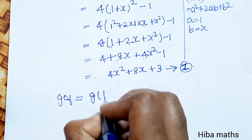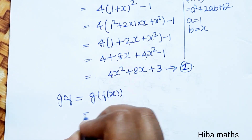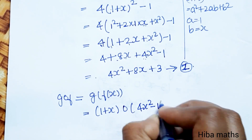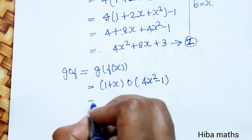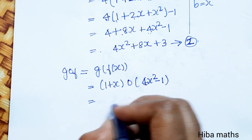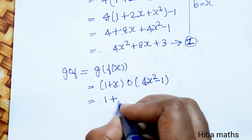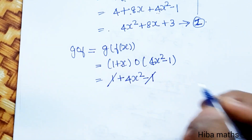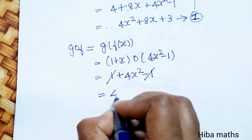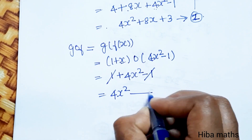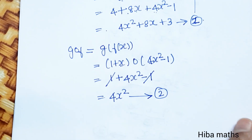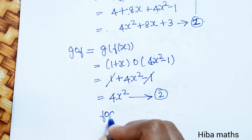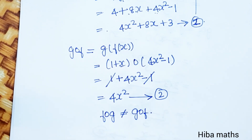Now g of f: g inside f of x — g function is 1 plus x, substituting f of x which is 4x square minus 1. So we get 1 plus 4x square minus 1; the plus 1 and minus 1 cancel, leaving 4x square. This is the second result. Since the two results differ, f of g is not equal to g of f.